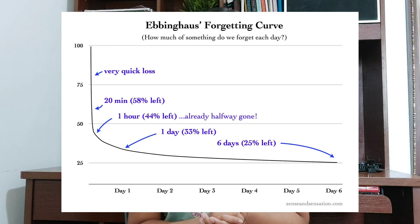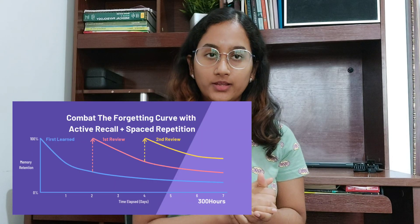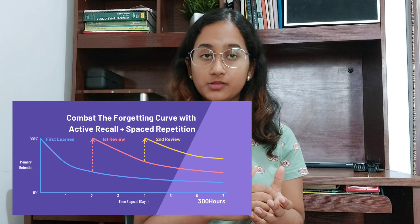Why is spaced repetition so important? On your screen you must be seeing a forgetting curve. On the y-axis is the retention part, and from the first revision the retention falls so steeply that by the sixth day you remember only twenty-five percent. But if you revise consecutively, the retention slope becomes nearly constant, meaning you have retained the maximum amount of information. That's why it's especially important in biology and organic chemistry, where there is a great amount of factual information.